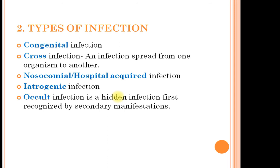Nosocomial infections are also called hospital-acquired infections; they are acquired by patients due to their visit to hospitals. Iatrogenic infections are infections which are caused by negligence of the physician, nurses, paramedical staff, or the equipment used for the diagnosis or treatment of the patient. Common examples are AIDS and hepatitis B, which can be transmitted by the use of contaminated needles and by the transfusion of infected blood and blood products.